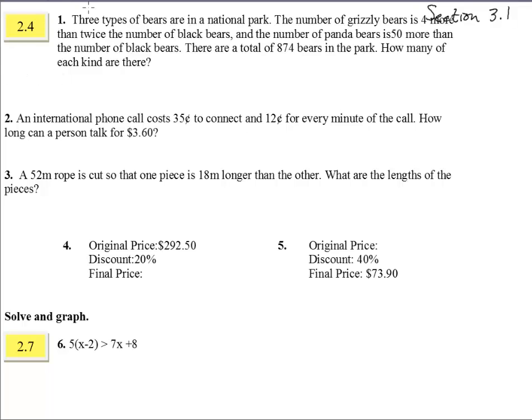Three types of bears are in a national park. The number of grizzly bears is 4 more than twice the number of black bears, and the number of panda bears is 50 more than the number of black bears. There are a total of 874 bears in the park.